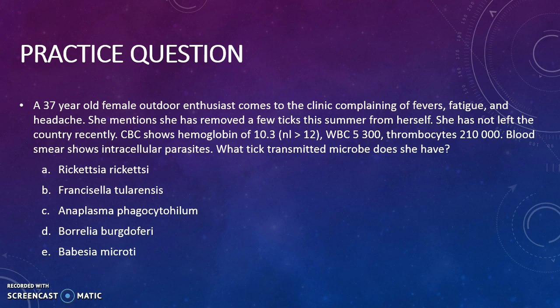Time for a fun practice problem. A 37-year-old female outdoor enthusiast comes to the clinic complaining of fevers, fatigue, and headache. She mentions she has removed a few ticks this summer from herself. She has not left the country recently. CBC shows hemoglobin of 10.3, WBCs of 5,300, and thrombocytes of 210,000. Blood smear shows intracellular parasites. What tick-transmitted microbe does she have? If you need a few seconds to think, pause the video right now.